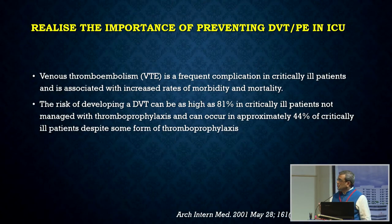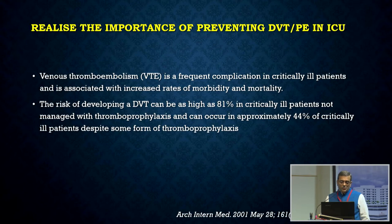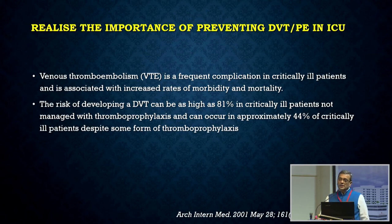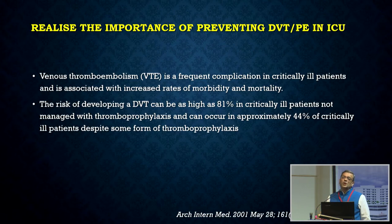We must realize the importance of preventing DVT-PE in the ICU. All the guidelines I have read say that venous thromboembolism is a frequent complication in critically ill patients and is associated with an increased risk of morbidity and mortality. Thrombosis may not be the only reason for admission, but it adds to it. The risk of developing DVT can be as high as 91%, and by good thromboprophylaxis we can bring it down to half, but some patients will still get a thrombus despite prophylaxis.